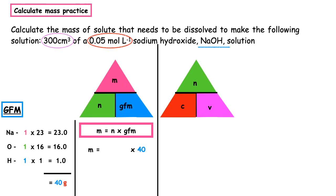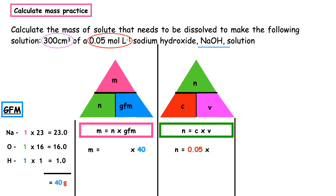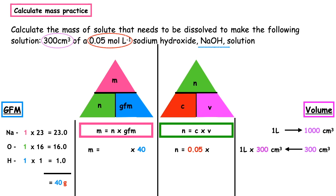To complete that formula we have to calculate the number of moles using the other triangle. Number of moles = concentration × volume. The concentration given is 0.05 mole per liter. The volume given is 300 centimeters cubed, which is not in the right unit, so we do a unit conversion: one liter equals 1000 centimeters cubed. We put 300 underneath 1000 and do a cross multiplication — one times 300 divided by 1000 gives us 0.3 liters. So the number of moles equals 0.05 times 0.3, which equals 0.015 moles.